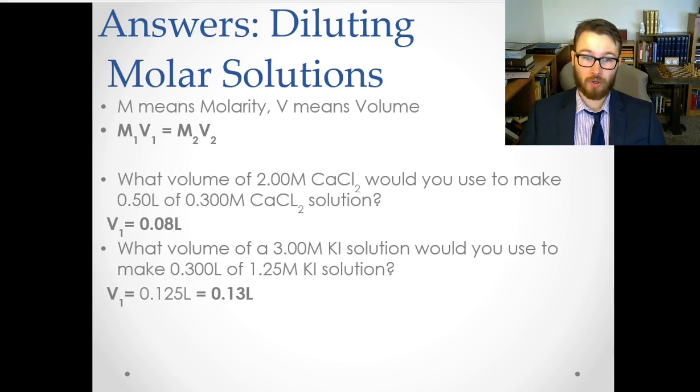You got 3 molar. What volume? Well, that means you're solving for V1. Then you have 1.25 molar, 0.3 liters. So 3 times X equals 0.3 times 1.25, meaning X equals 0.3 times 1.25 divided by 3. X equals 0.13.